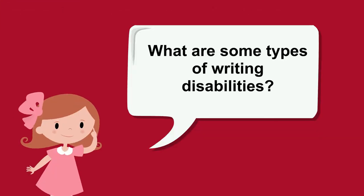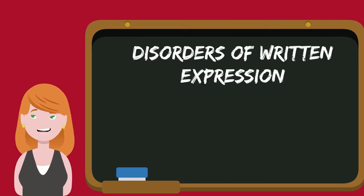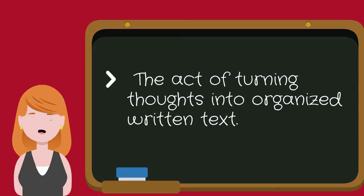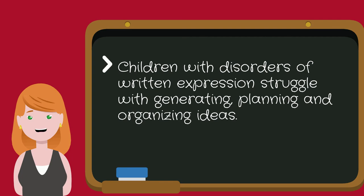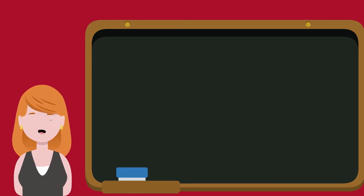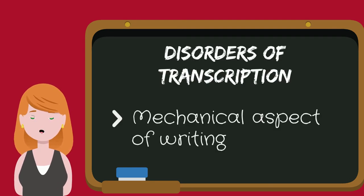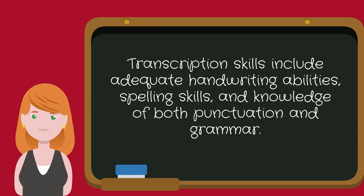What are some types of writing disabilities? A writing disability includes things like disorder of written expression, which is the conceptual aspect of writing, as well as the act of turning thoughts into organized written text. Children with disorders of written expression struggle with generating, planning, and organizing ideas. Another aspect of a writing disability is the disorder of transcription, which is the mechanical aspect of writing. Transcription skills include adequate handwriting ability, spelling skills, and knowledge of both punctuation and grammar.